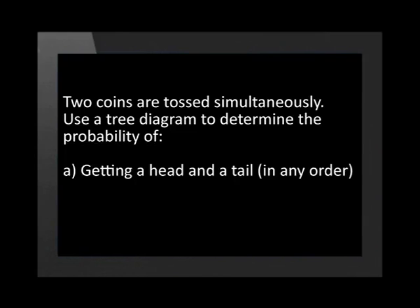In the first example, we look at the events of tossing two coins. The outcome on the first coin has no influence on the second coin, which shows that the two events are independent. The question asks: two fair coins are tossed simultaneously. Use a tree diagram to determine the probability of getting a head and a tail in any order, and getting no heads.